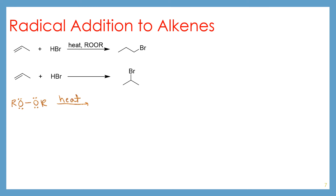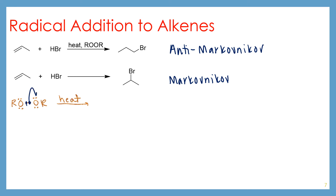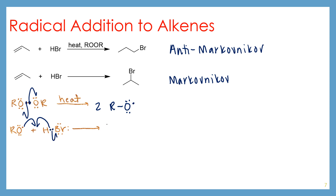In the beginning, you have your dialkyl peroxide, and you add in heat or light, and it's going to split apart, giving you two equivalents of the alkoxyl radical. In the next step, your alkoxyl radical reacts with the halogen acid, abstracting the hydrogen atom. So one of these electrons gets here, this electron comes here, this one gets put onto bromine. And now you've created an equivalent of an alcohol and also a bromine radical.